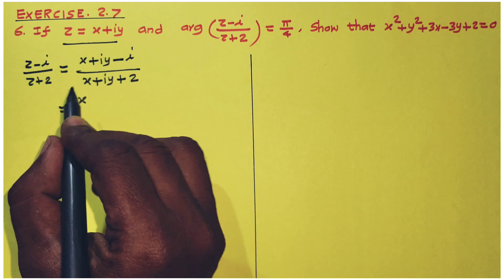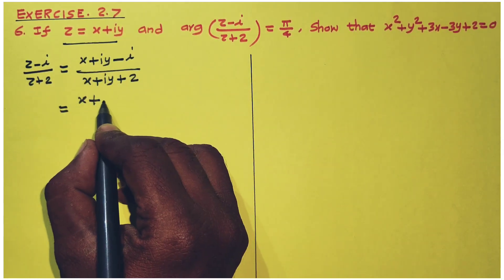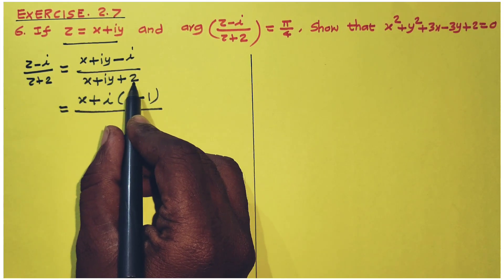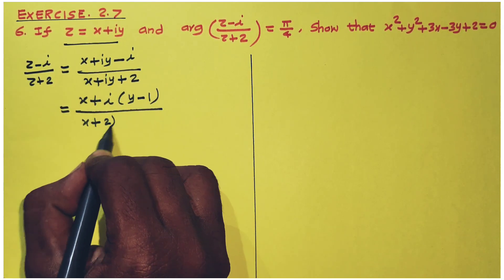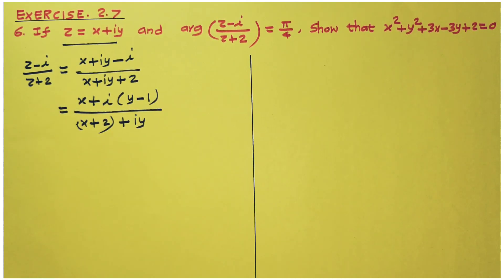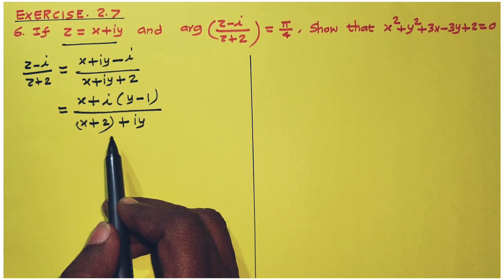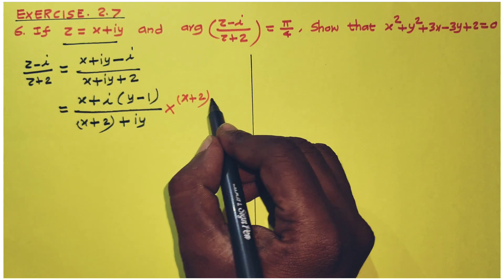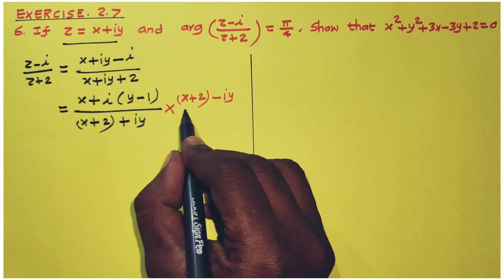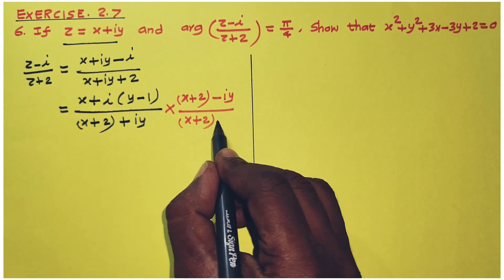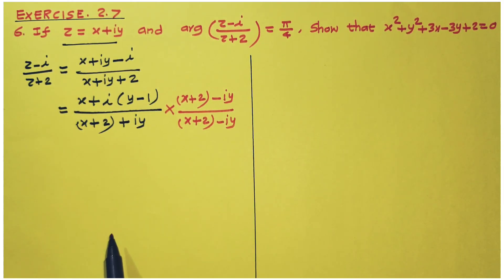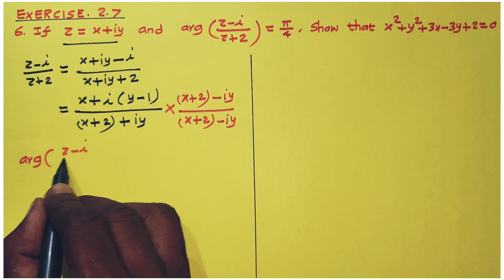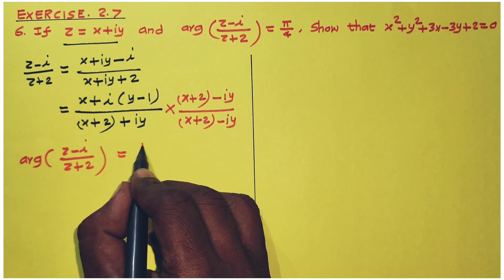The real part is x, the imaginary part is i. In the numerator: imaginary part is y minus 1. In the denominator: real part is x plus 2, imaginary part is y. To simplify, multiply numerator and denominator by the conjugate of the denominator, which is x plus 2 minus iy.